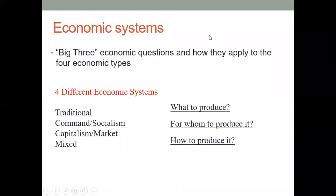Economic systems. Today we are going to take you on a journey concerning how economic systems change over time and the questions that people and decision makers usually ask. The three main questions are: what to produce, for whom to produce, and how to produce.